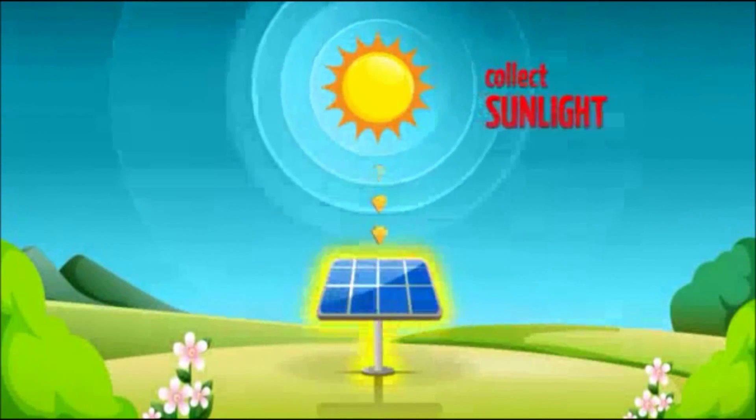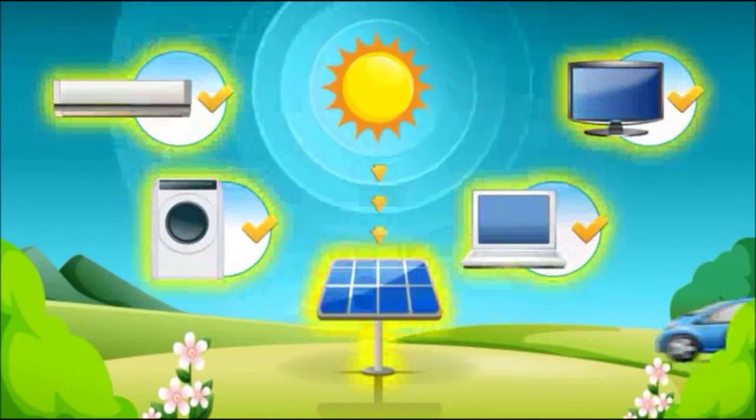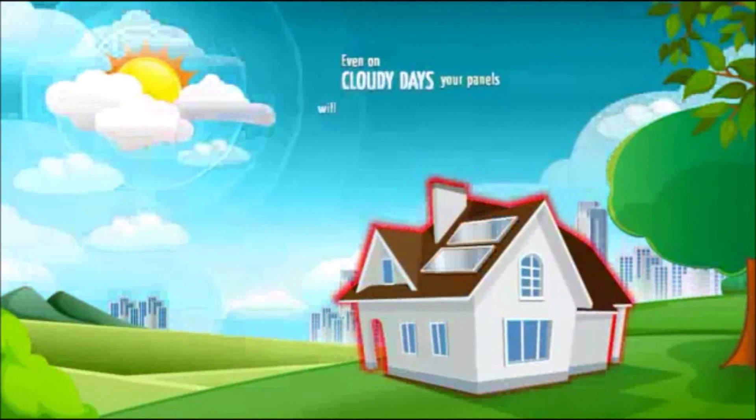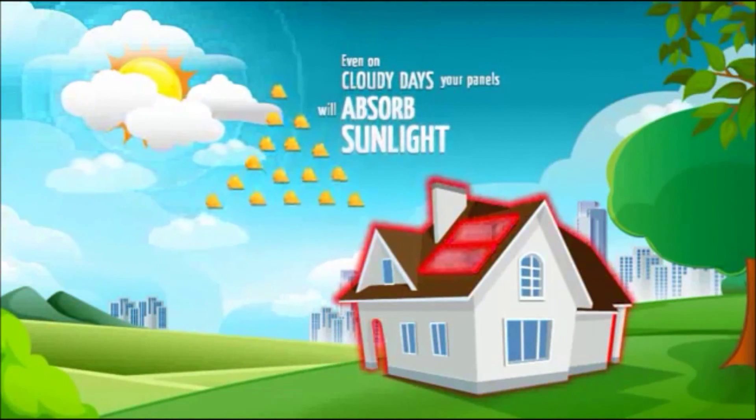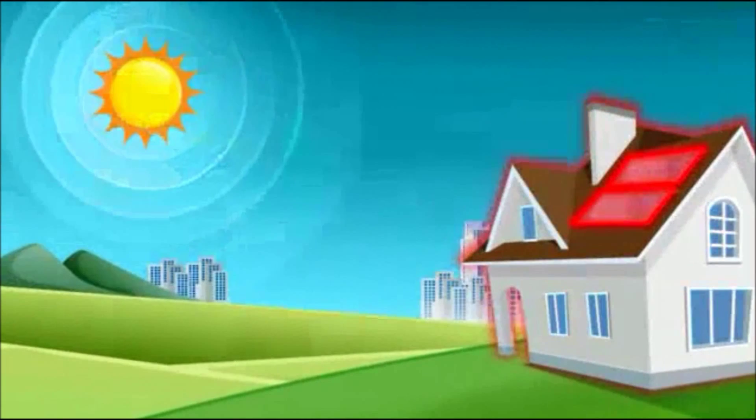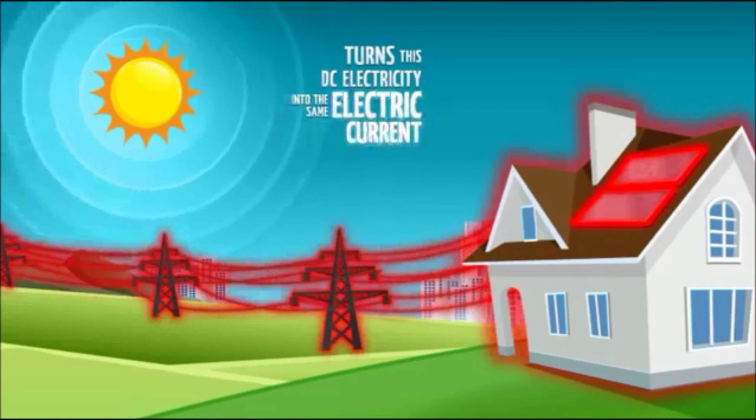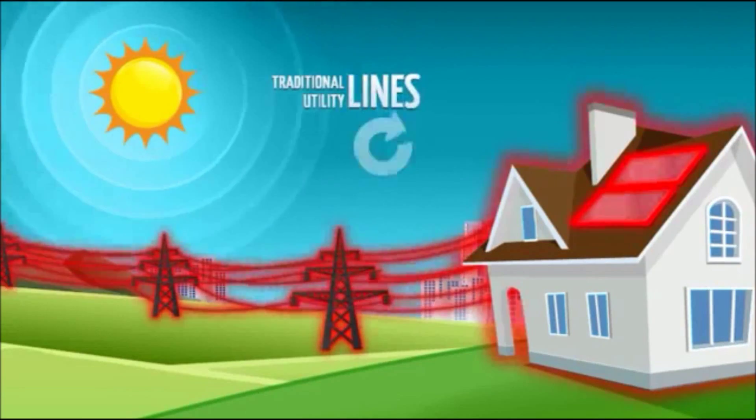Solar panels collect sunlight and turn it into direct current or DC electricity. Even on cloudy days your panels will absorb sunlight. The system's inverter then turns this DC electricity into the same electric current that comes from your traditional utility lines.